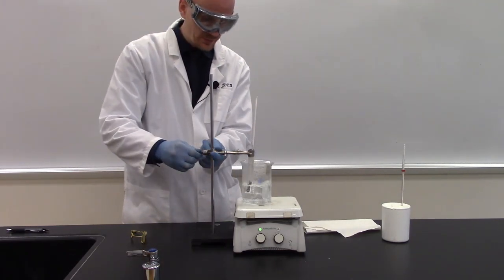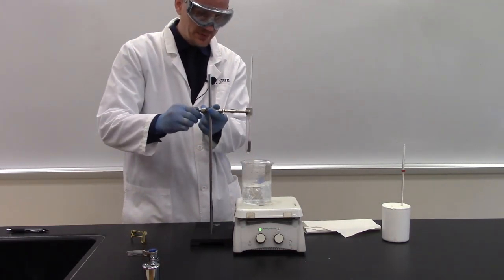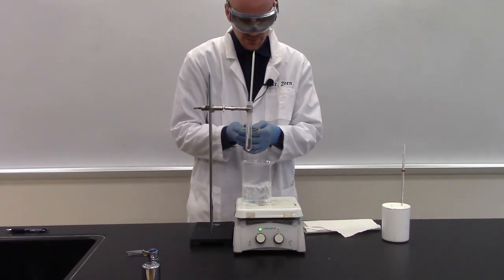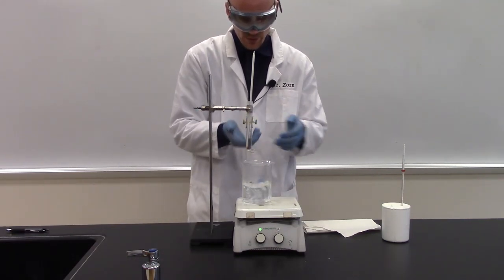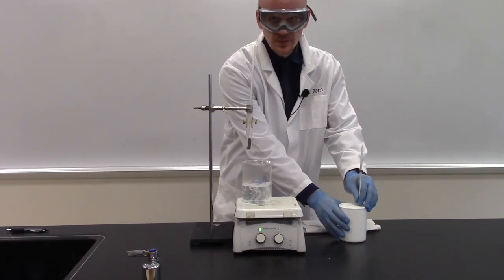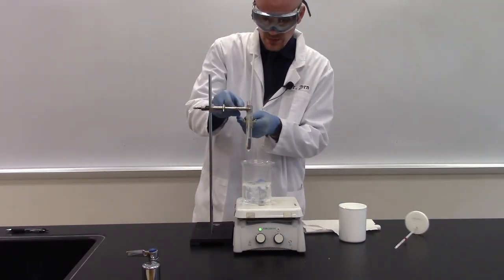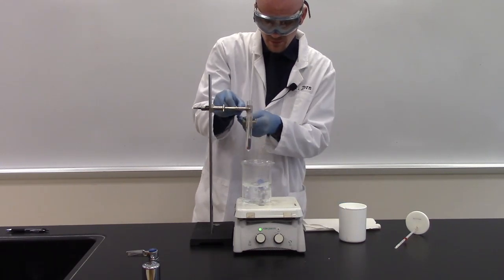And I'm going to then carefully bring my clamp up. I'm going to use test tube tongs to grab a hold of my test tube. I'm going to take the lid of my calorimeter off. I'm going to carefully release the test tube, pull out my thermometer,